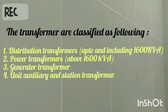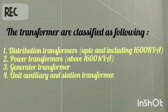Transformers are mainly classified into four groups. First is distribution transformers up to and including 1600 kVA. Second is power transformers above 1600 kVA. Third is general rated transformers. Fourth is unit auxiliary and station transformers.